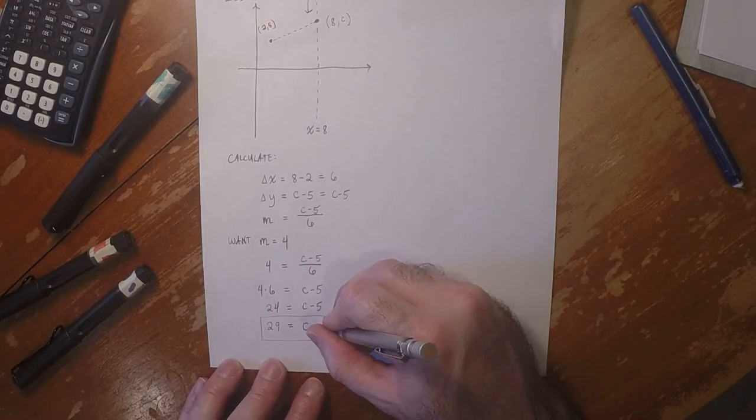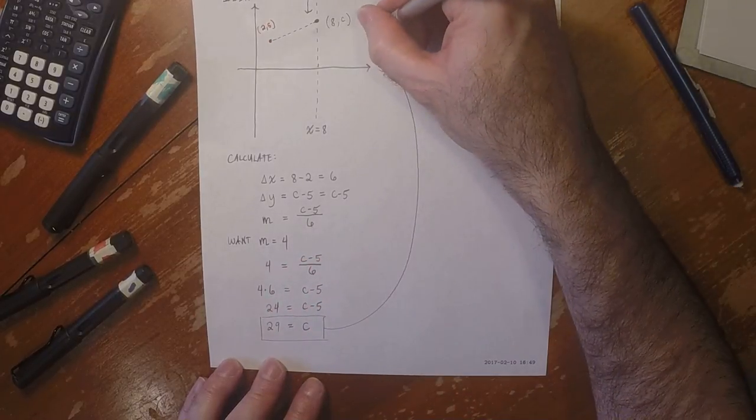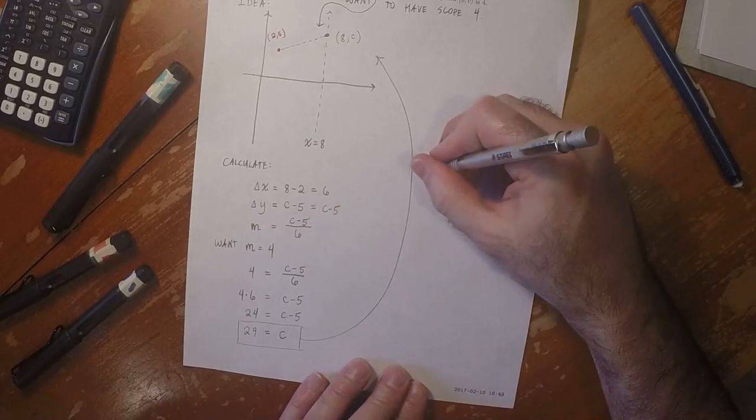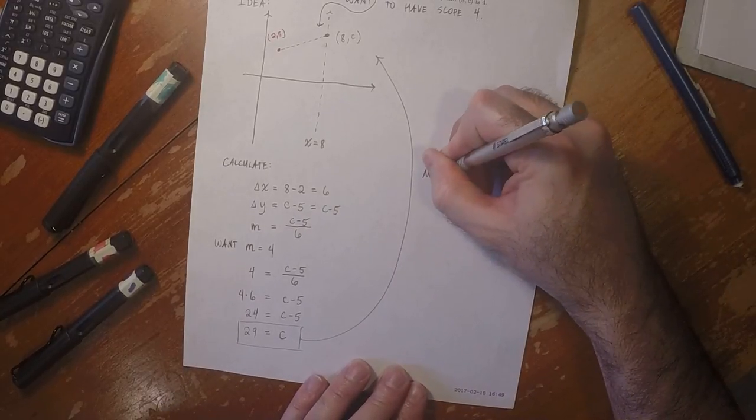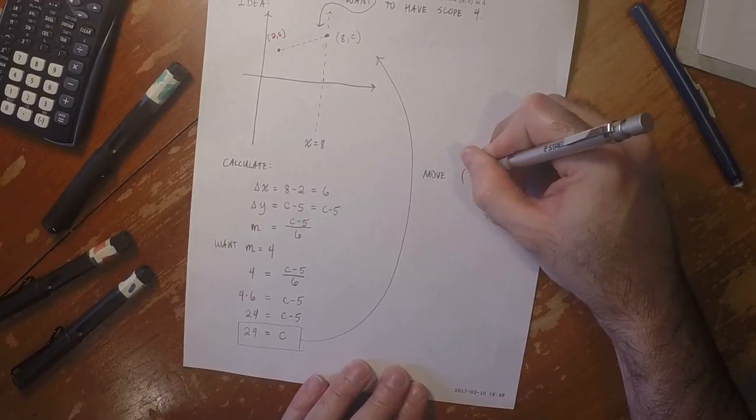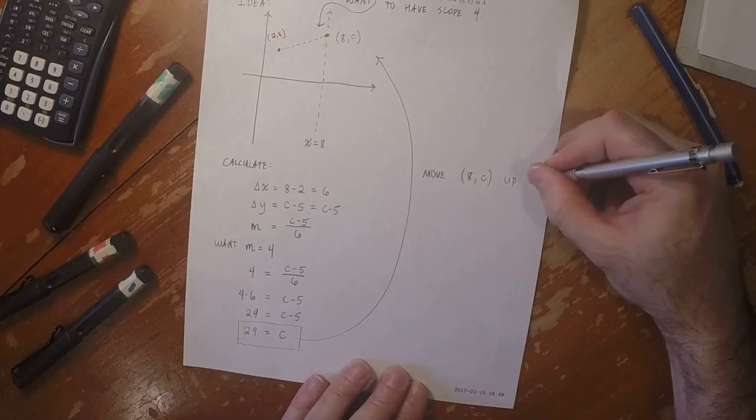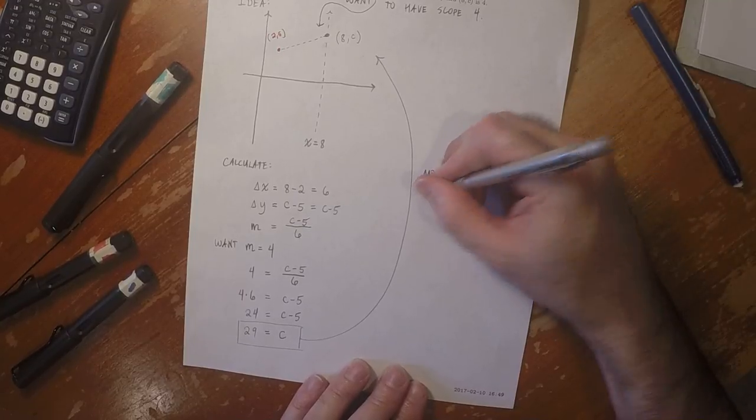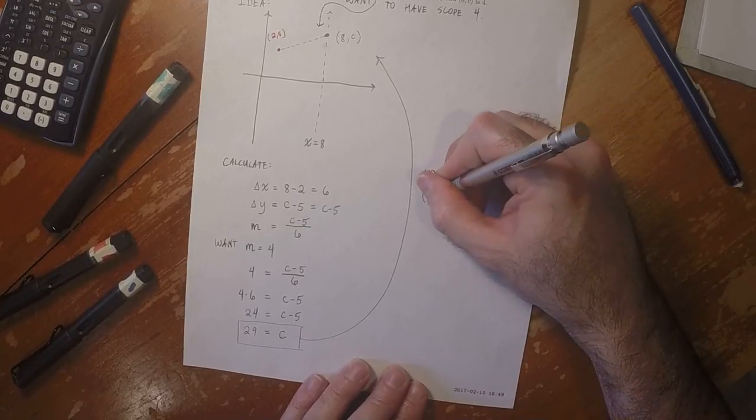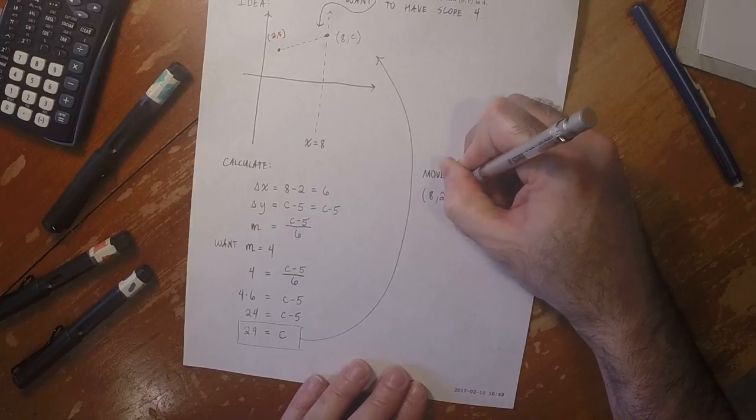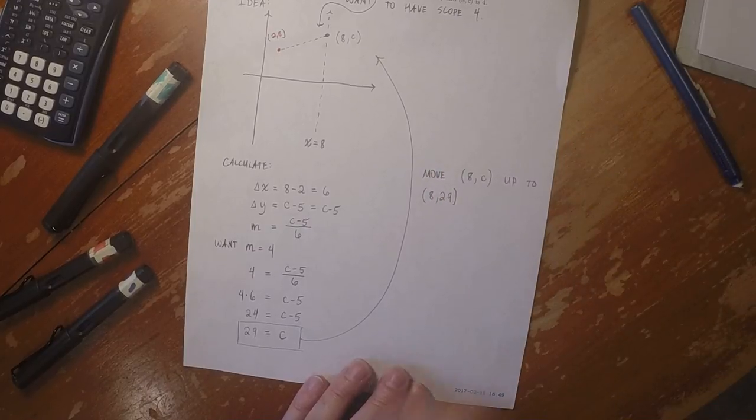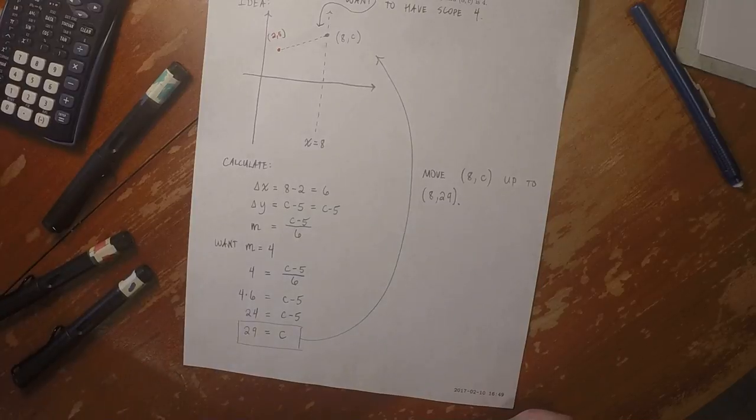But what that means is that in this picture, we would need to move the point (8,c) up to the point (8,29). And that's the answer.